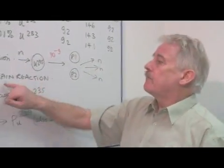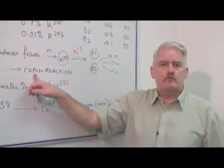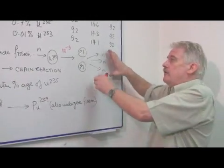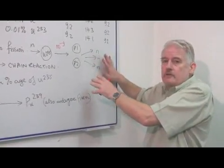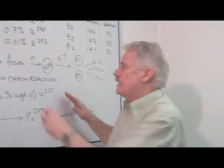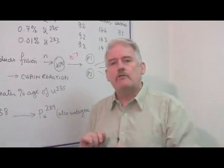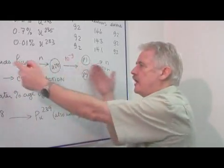Now, the chain reaction can be controlled by absorbing neutrons. If you absorb them, it'll stop the reaction. Therefore, you can get the chain reaction but control it, and that's what we do in a nuclear reactor. We have a fission reactor, a fission process.